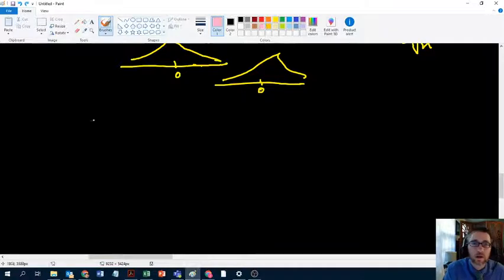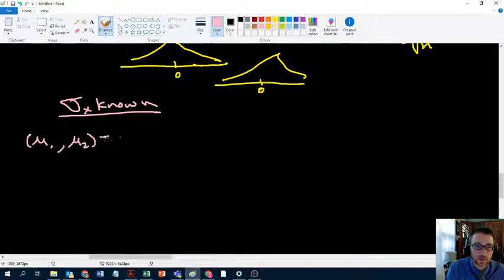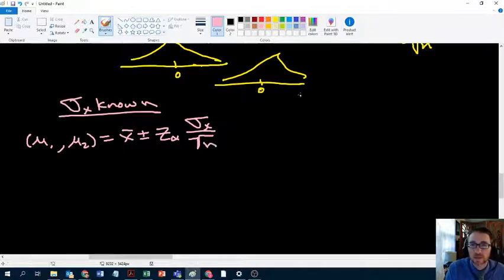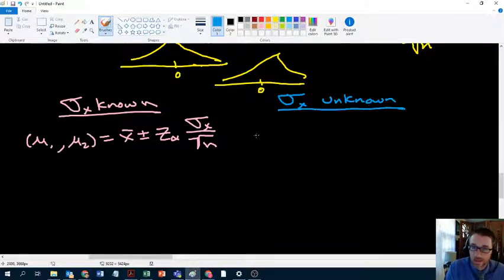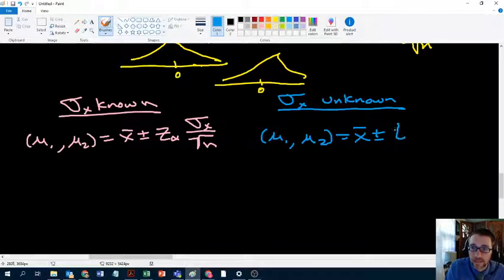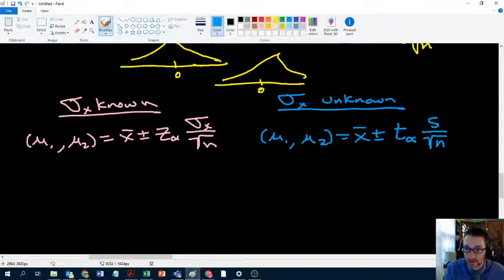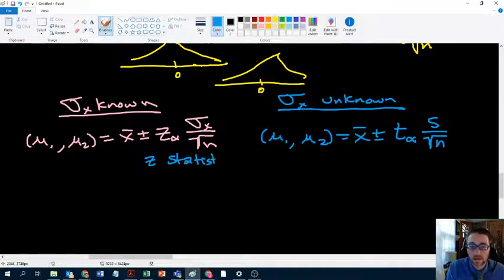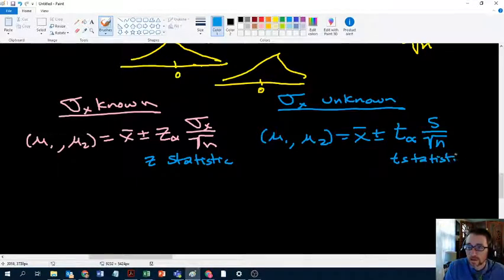Just like before, so if sigma is known, then what we would have is mu1, mu2 equals x bar plus or minus z alpha times sigma x over the square root of n. If sigma is unknown, you can calculate bounds very similarly. Mu1 comma mu2 equals x bar plus or minus t subscript alpha times s over the square root of n. Where our standard error before we used the standard deviation of the population, now we're using the estimated value, the sample standard deviation. To account for that, instead of using a z statistic, we're going to be using a t statistic. So this is a z statistic for the confidence interval, and this is a t statistic.